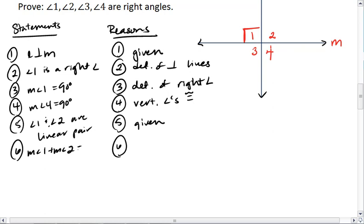So we'll rewrite this to show that they're 180. And that is by the definition of a linear pair, or the linear pair postulate.